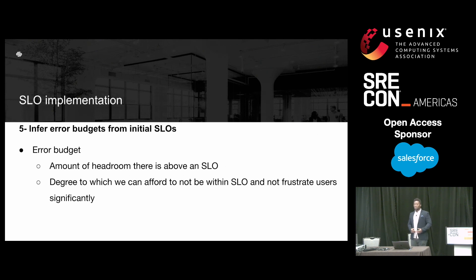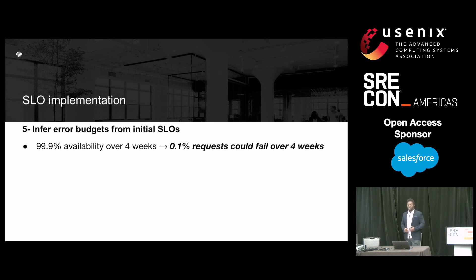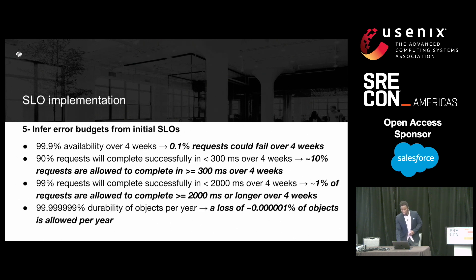From these initial SLOs, we were able to infer some error budgets. An error budget is the amount of headroom there is above an SLO — in other words, the degree to which we can afford to not be within an SLO and not frustrate users significantly. For example, our error budgets were that with three nines availability over four weeks, 0.1% of requests could fail over the same period. In other words, our service can be unreliable for up to about 43 minutes per month without frustrating users, which I think is pretty good, at least for us engineers. And we apply the same concept for the rest of our SLOs, where eight nines durability of objects per year means a loss of 0.00001% of objects is allowed per year.